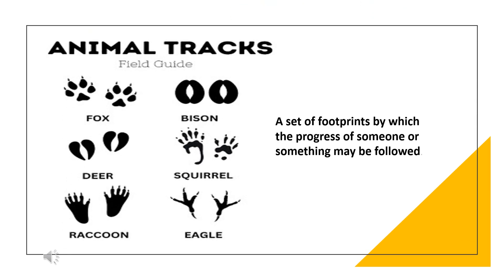Animal tracks: a set of footprints by which the progress of someone or something may be followed. Here are a few animal tracks: a fox, bison, deer, squirrel, raccoon, and eagle.